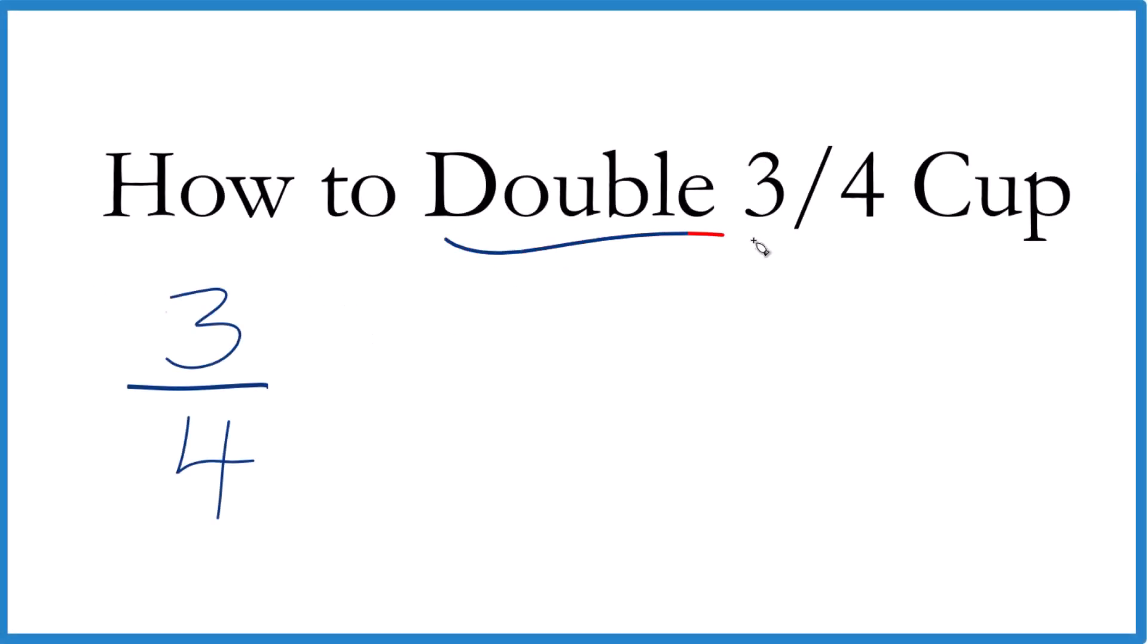So let's look at how we can double three-fourths of a cup. To do this, we're just going to multiply it by two. We're going to double this. And when we multiply by two, you can think about it as two over one if you want, so everything lines up.